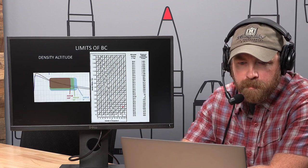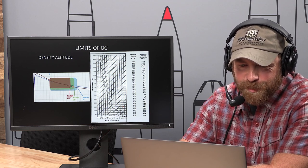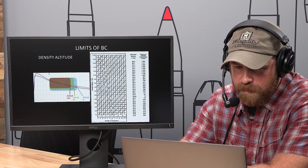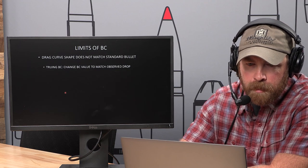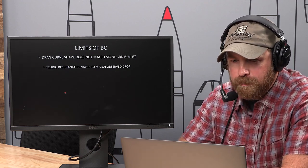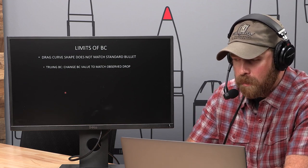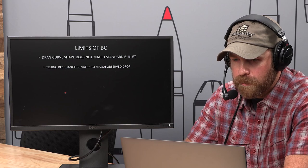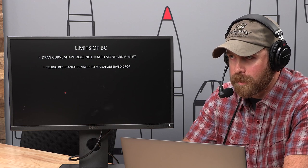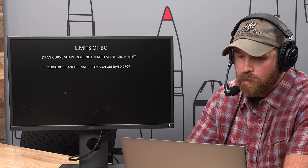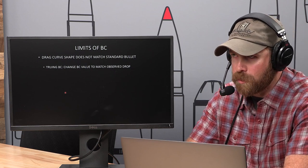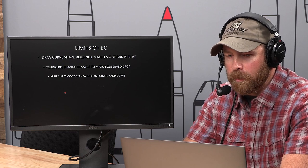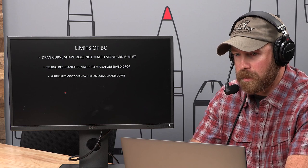As temperature changed, it changed where we lived on the drag curve, and different locations have different amounts of spacing — different errors. To summarize the limitations of BC broadly: the drag curve shape of your bullet does not match the drag curve shape of the standard bullet you're using. A BC calculator only knows the shape of the standard you select — G1 or G7 — it doesn't know what the real drag curve looks like. When you true a BC, you change the BC value up or down to match your observed drop. What that does inside the program is artificially move the standard drag curve — say the G7 — up or down. It can't bend it. It just moves it up and down.